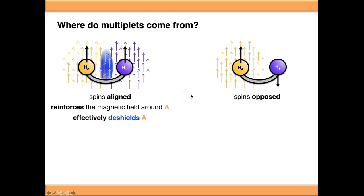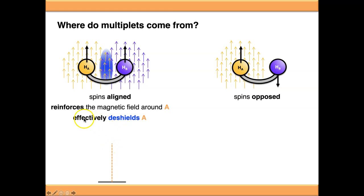From the theory, the stronger the magnetic field your nucleus experiences, the more deshielded it is, and the further to the left on the spectrum it appears. So taking our original signal for HA — the chemical shift it would appear at if not coupling to anything — this aligned-spin scenario effectively deshields A, moving the signal slightly to the left, slightly to higher ppm.